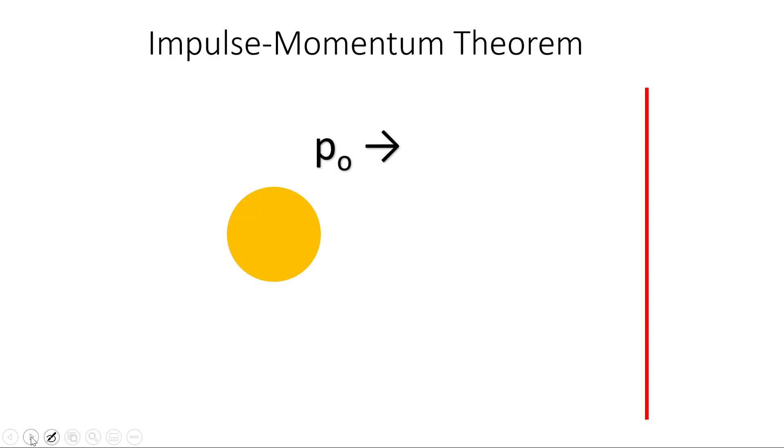The equation before is actually the impulse momentum theorem. Impulse equals change in momentum. What it means is if an object has some momentum and there's a force and it hits a wall, it's going to apply a force to that wall, but that wall is going to apply an equal force back. The force applied times the time it's applied causes that object's momentum to change.